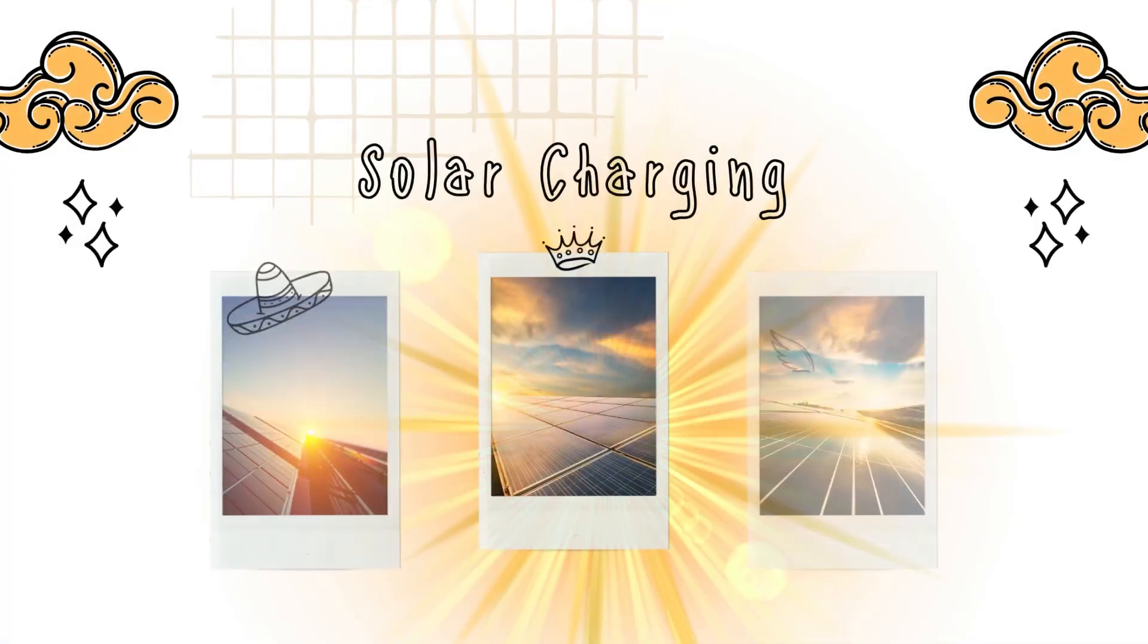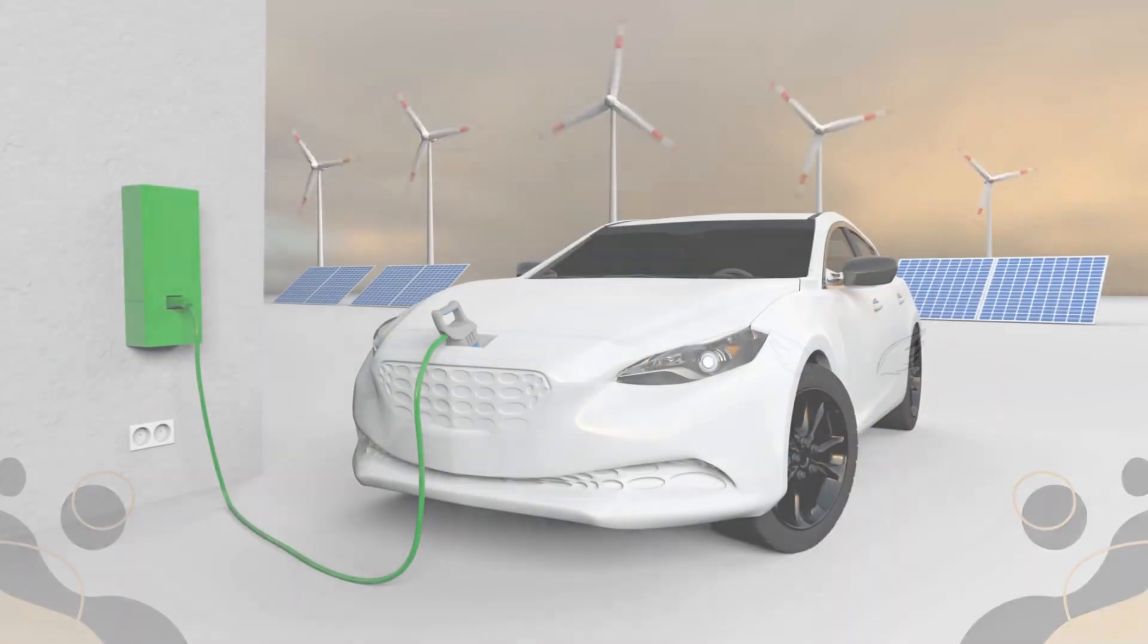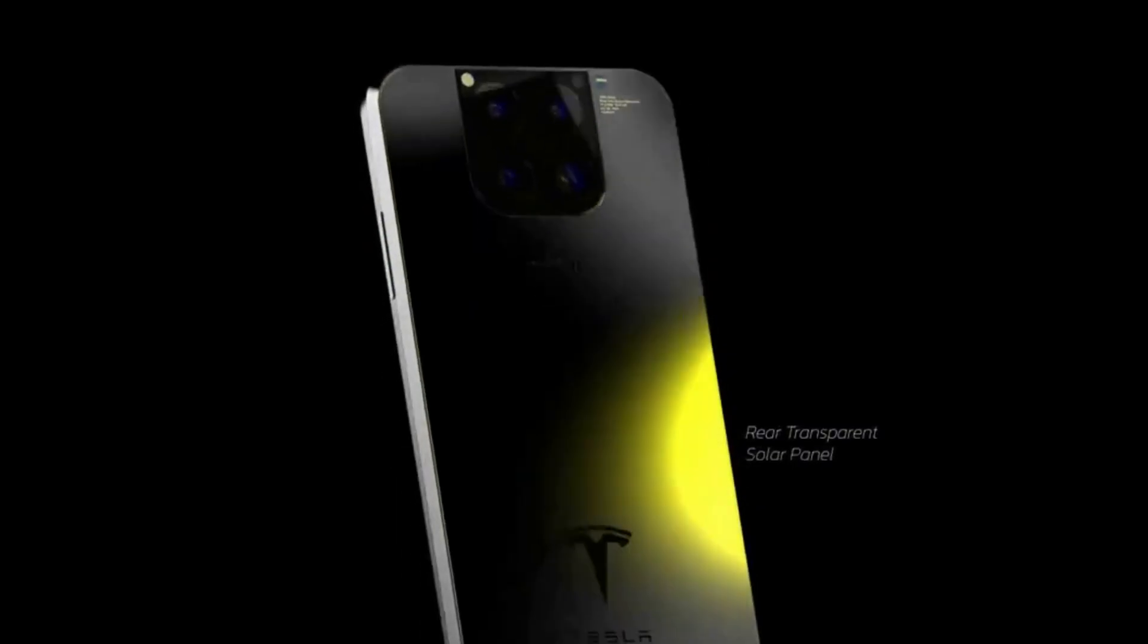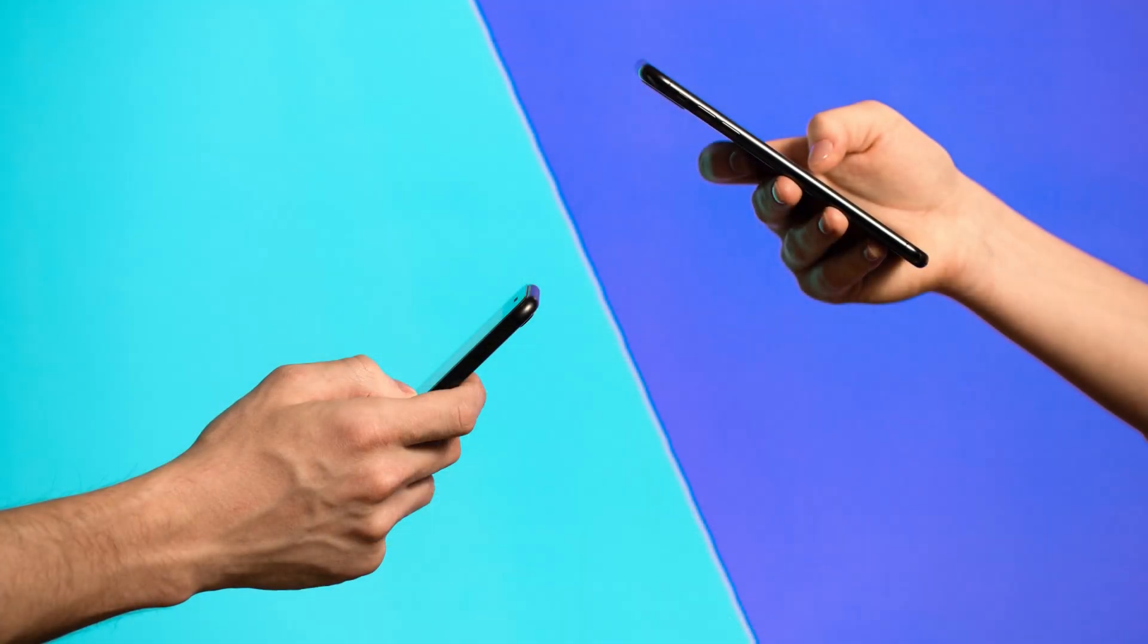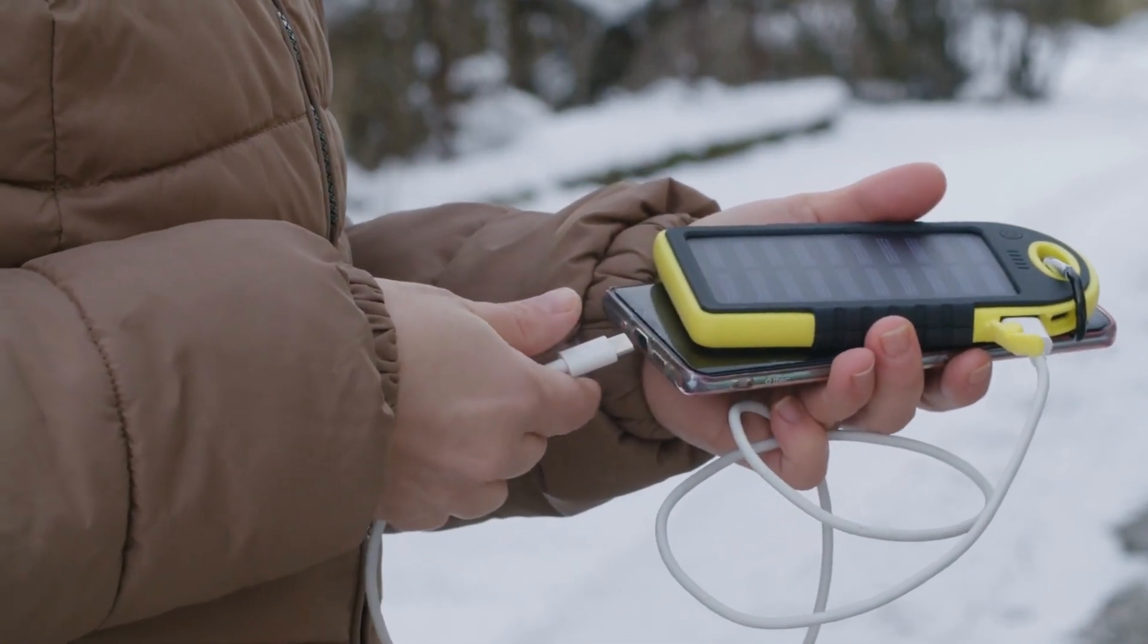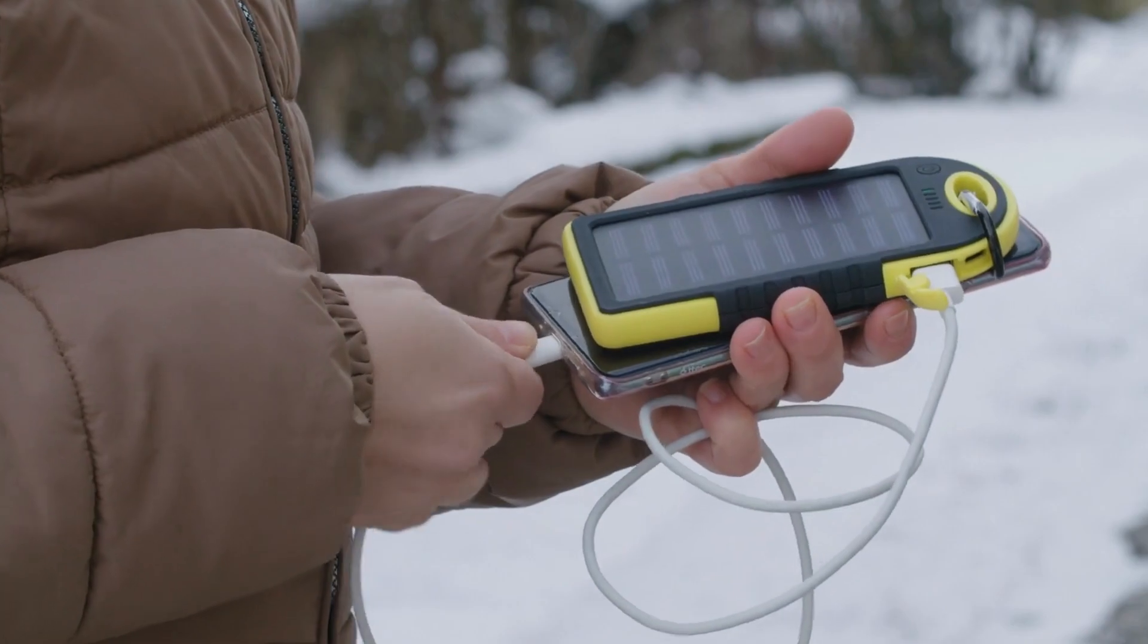Tesla's foray into the electric vehicle market has established the brand as a leader in sustainable technology. Incorporating solar charging capabilities into a Tesla phone would align perfectly with this ethos. While it's unlikely that a smartphone could rely solely on solar power for its energy needs, a Tesla-branded phone could feature an innovative case that harnesses sunlight to supplement its battery life.